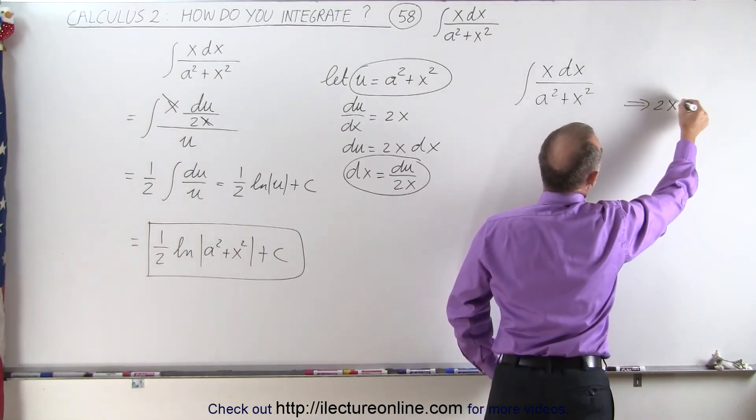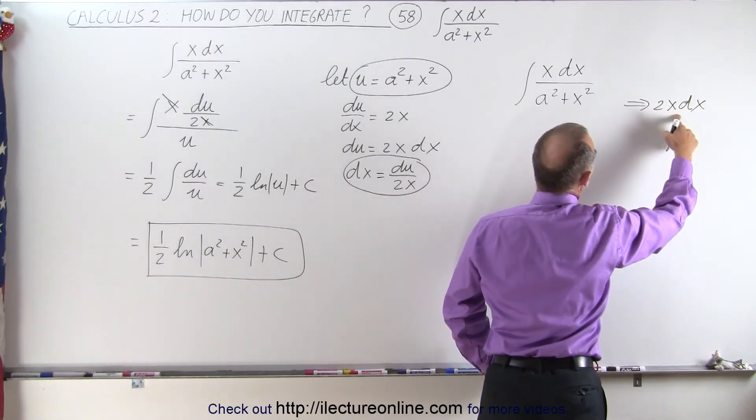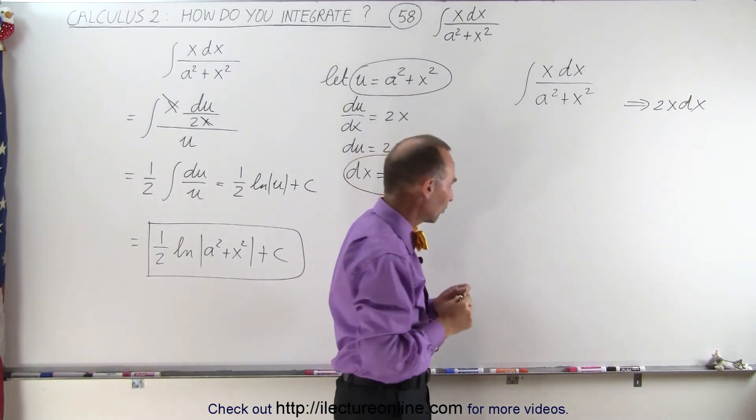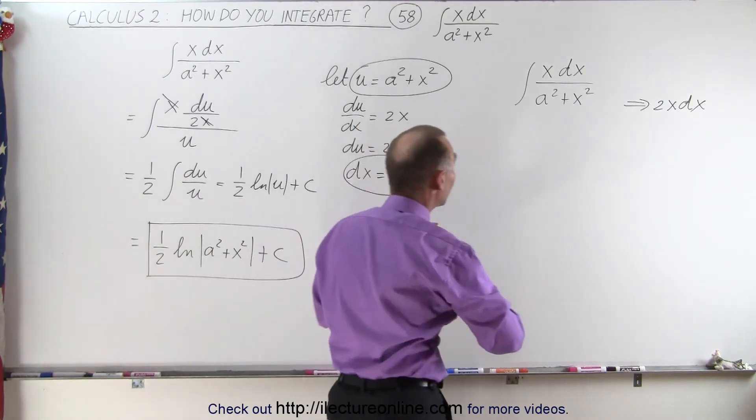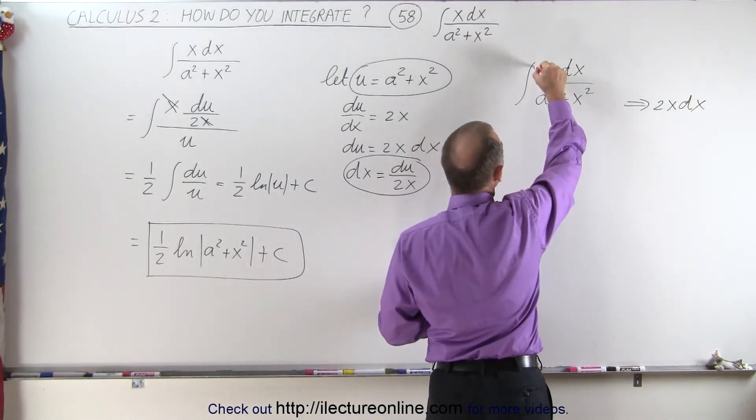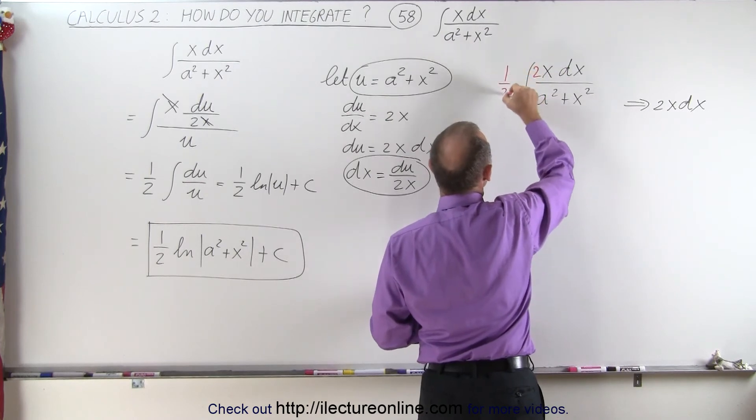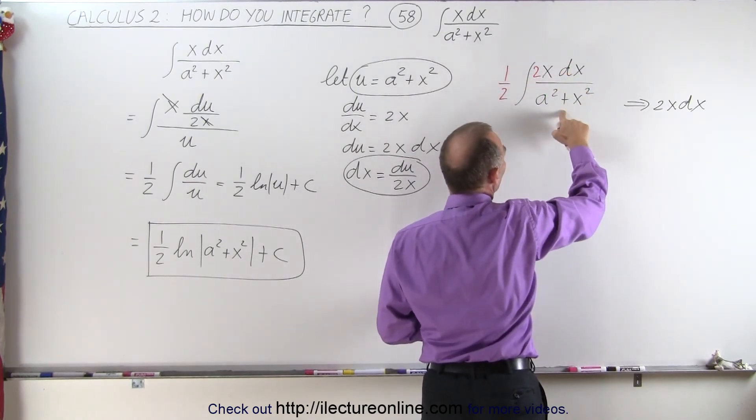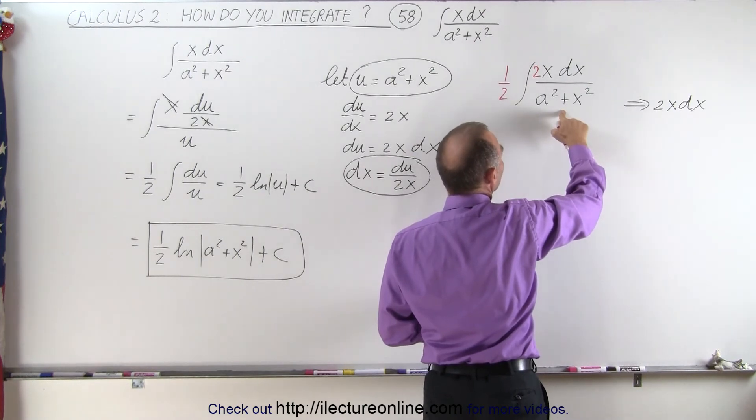So if we take the denominator and look for the differential, we need a 2x dx in the numerator. But we don't have a 2x dx, we only have a x dx, which means that I can multiply the numerator by 2, and then divide by 2.